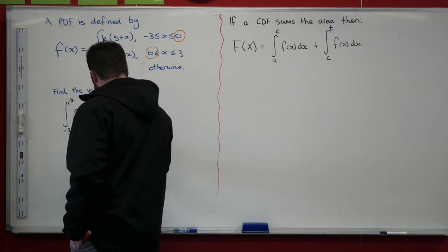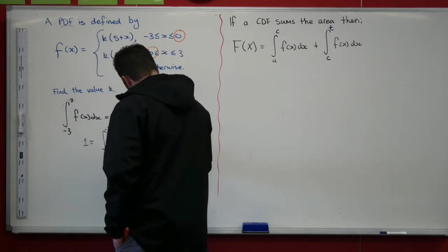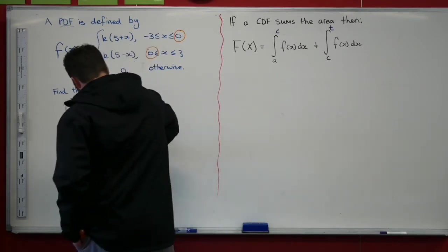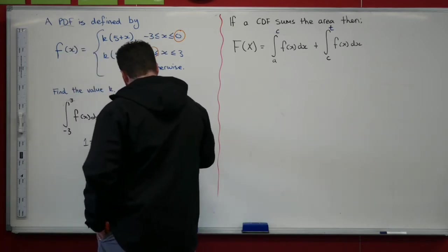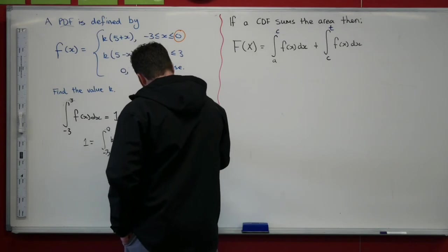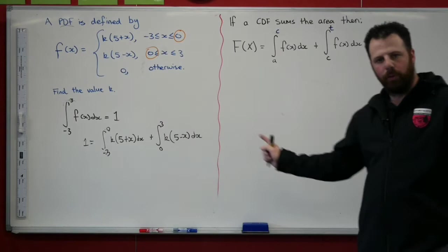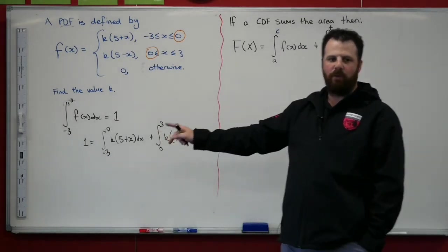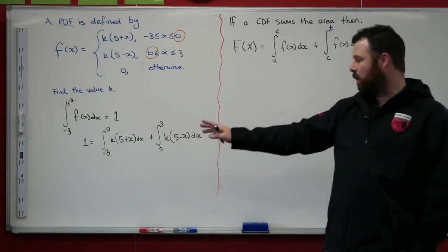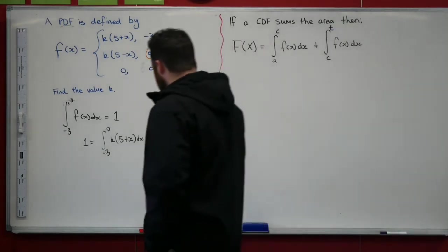We need to integrate this one and add it together with the integral of this one and figure out for when does that equal 1. So what we know is that 1 is going to be equal to the integral between minus 3 and 0 of k(5 + x) with respect to x, plus the integral between 0 and 3 of k(5 - x) with respect to x. When we evaluate those two, we will get a value of when does k equal 1.